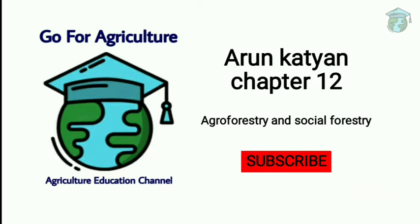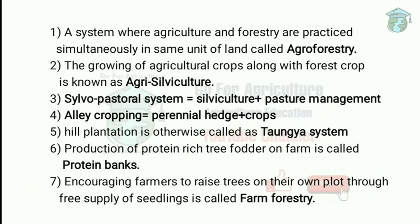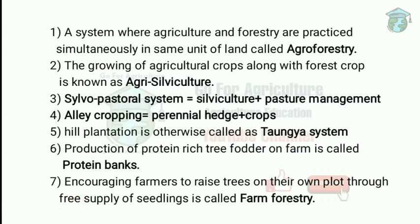The first question: a system where agriculture and forestry are practiced simultaneously in the same unit of land is called agroforestry. So agroforestry means a system where both agriculture and forestry are practiced in the same unit of land. The growing of agriculture crop along with forest crop is called agrisilviculture.